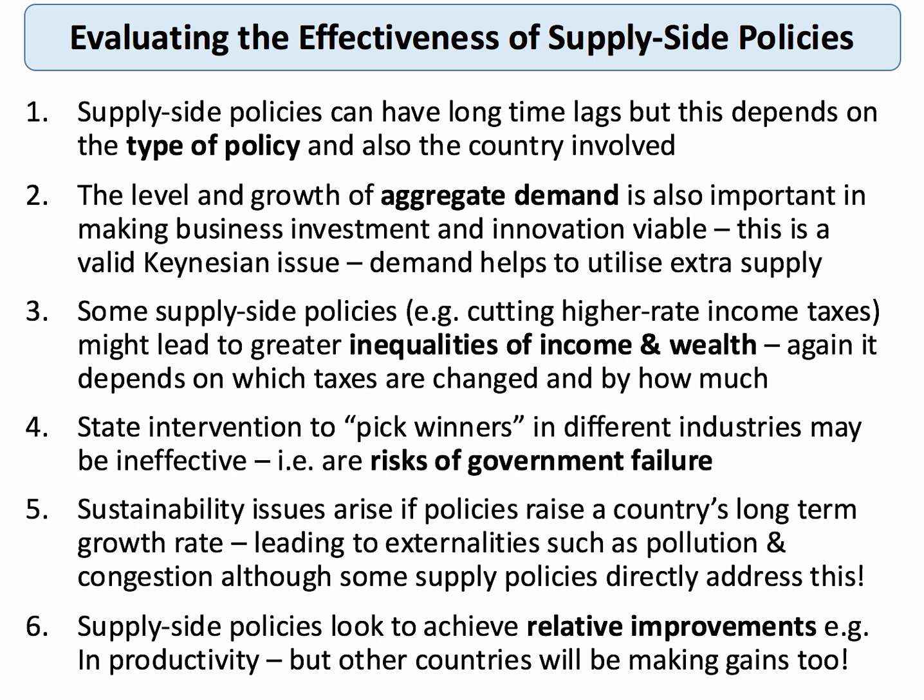Another issue is sustainability. If supply-side policies are successful and you grow more quickly, there can be negative spillover effects — externalities such as pollution, congestion, and waste, which will require some response. Although supply-side policies focusing on reducing waste, emissions, and pollution directly address this — it is possible to increase the growth rate without necessarily making the environment worse.